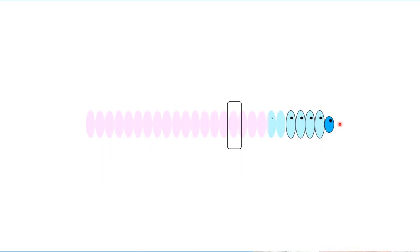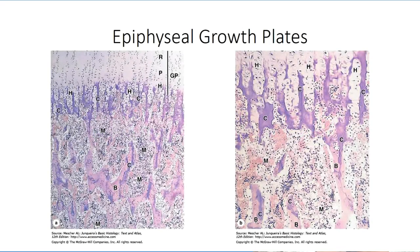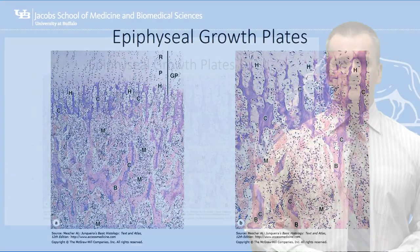Ultimately, the proliferation zone slows, the osteoclasts catch up to zone 1, and all cartilage is ossified, leaving a remnant of the growth plate called the epiphyseal line. At this stage, growth ceases and the bone reaches its terminal length.